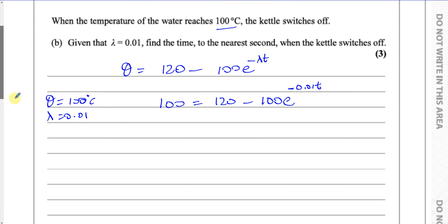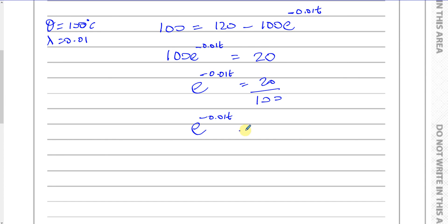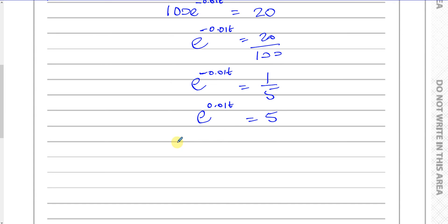Rearranging: 100 e to the power of minus 0.01 t equals 120 minus 100, which is 20. Dividing both sides by 100: e to the power of minus 0.01 t equals 20 over 100, which is 1 fifth. Because this is a negative power, I can write it as a positive power: e to the power of 0.01 t equals 5. Taking the natural log of both sides: 0.01 t equals ln 5, so t equals ln 5 divided by 0.01.